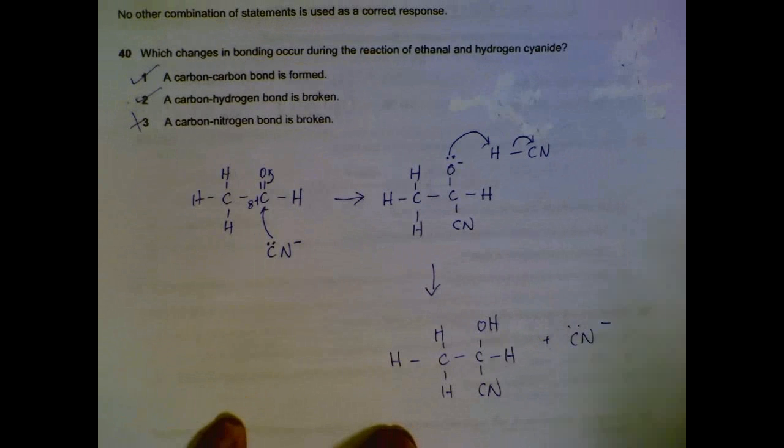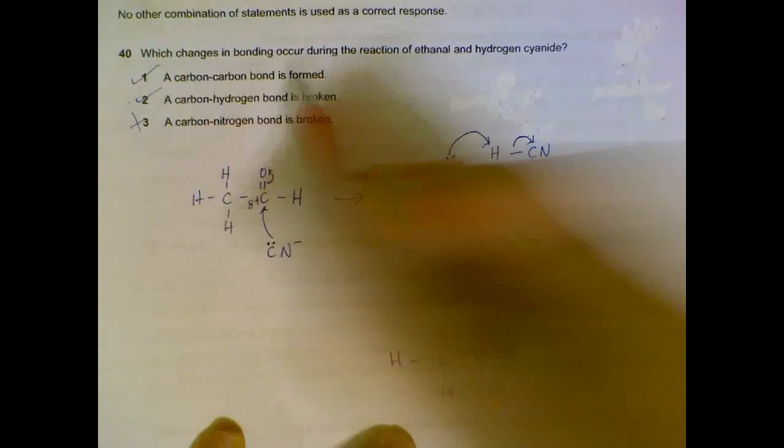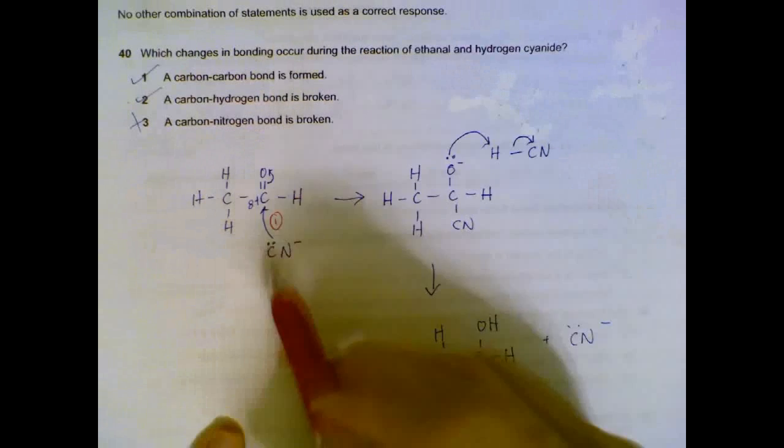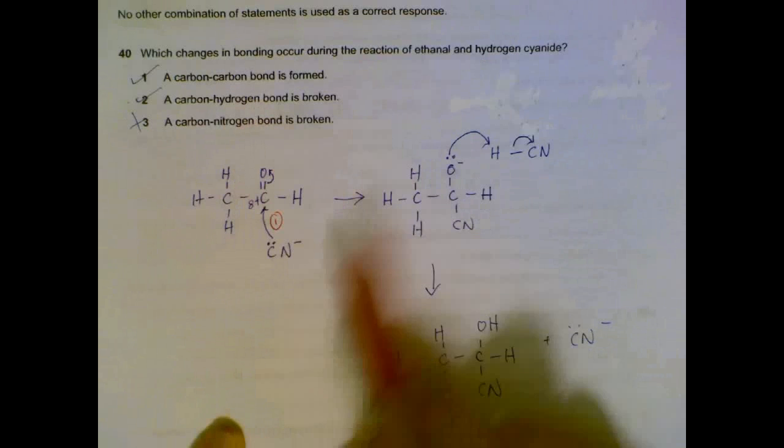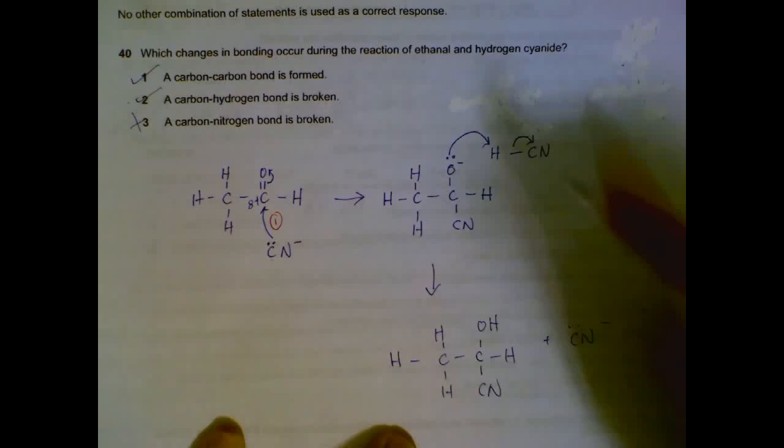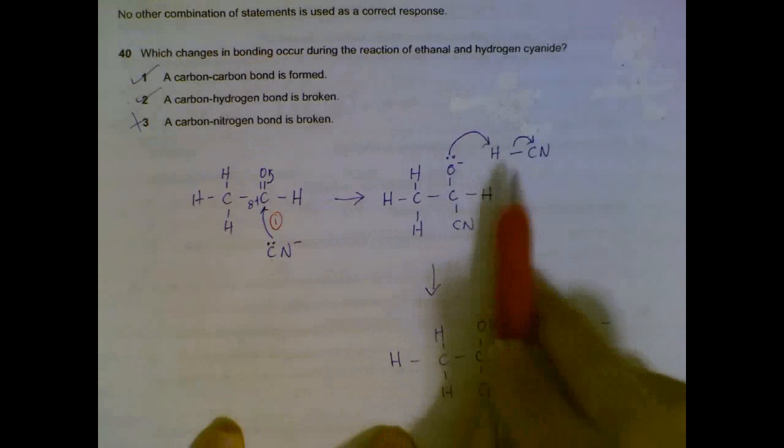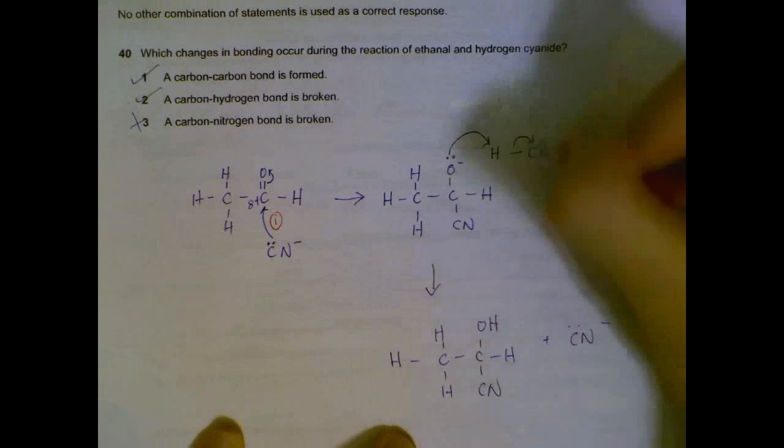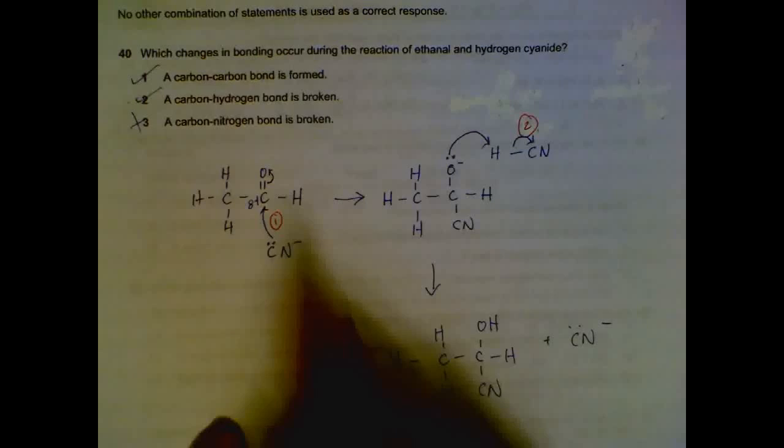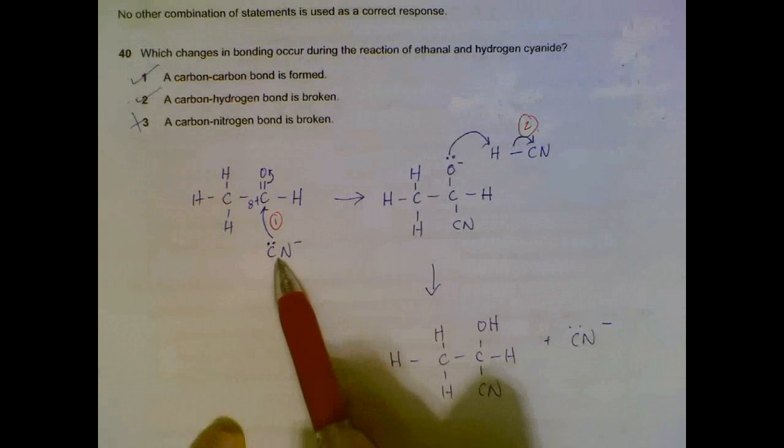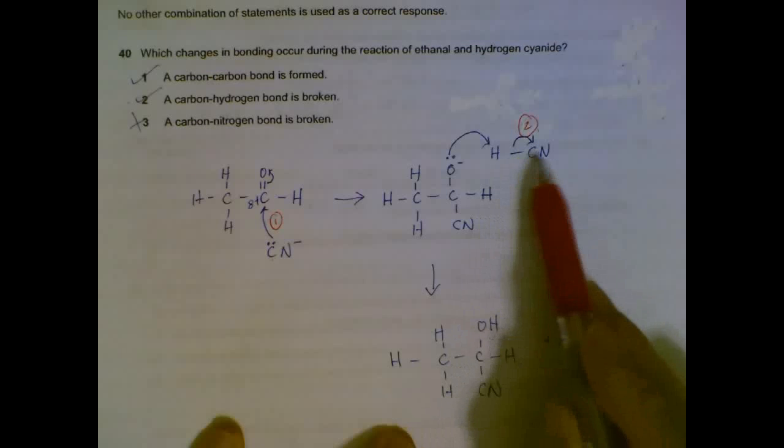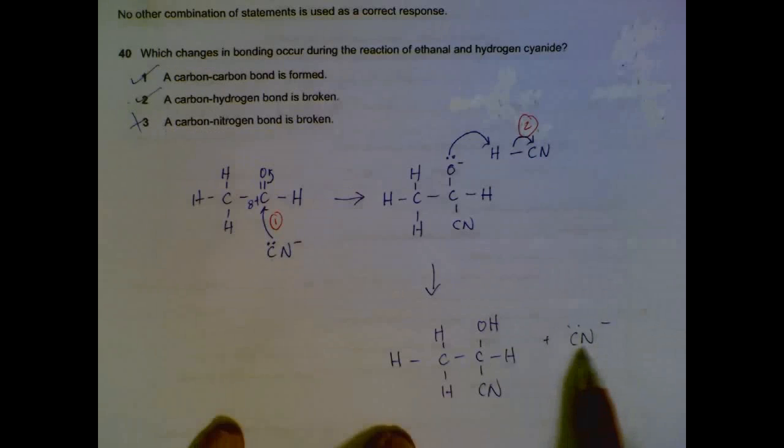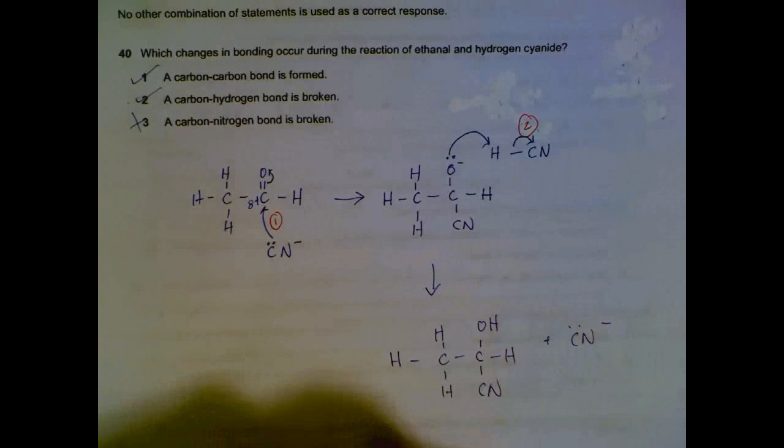Giving us this molecule here. So what happens? A carbon-carbon bond is formed, is happening here. Carbon-carbon bond forming. Carbon-hydrogen bond broken, that will be happening here. This bond between hydrogen and carbon is broken. A carbon-nitrogen bond broken, it is not broken here. They stick to each other. And it is also not broken here between this carbon-nitrogen, they are together also. So number 3 is out. It is not broken.